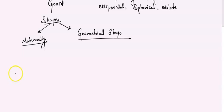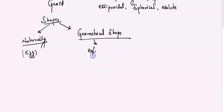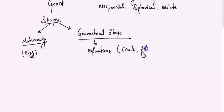What do we mean by naturally occurring shape or geometrical shape? Whatever you see naturally in nature — for example, you can see the formation of an egg — that is nothing but a naturally occurring shape. In case you are going to see any geometrical shape, it is defined as per equations. For example, you can see a circle, a flower, or a rectangle. These are all geometrical shapes.